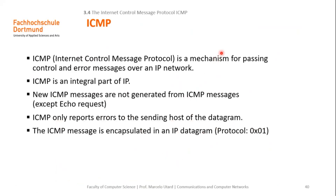ICMP is an integral part of IP — it's a complement of the Internet Protocol. ICMP messages are not generated from other ICMP messages; that is, if an error occurs transmitting an ICMP message, except in the case of an echo request, another ICMP message is not generated. ICMP only reports errors to the sending host of the datagram. The ICMP message is encapsulated in an IP datagram using protocol number 1.